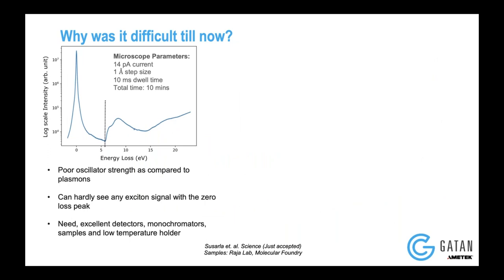The question for electron microscopy was: can you tell us what's going on at the atomic scale, both in terms of structure and what happens to the electronic states, and why are these excitons behaving in this fashion? Though the problem statement is very simple, the solution is actually very difficult. This is a typical EEL spectrum — if you notice it, you can't see anything apart from the zero loss peak, because the oscillator strength for the exciton tells you how strong the peak would be in the EEL spectrum, and the oscillator strength for excitons in EELS is actually very low. That means you need a very sensitive detector to detect these subtle signals.